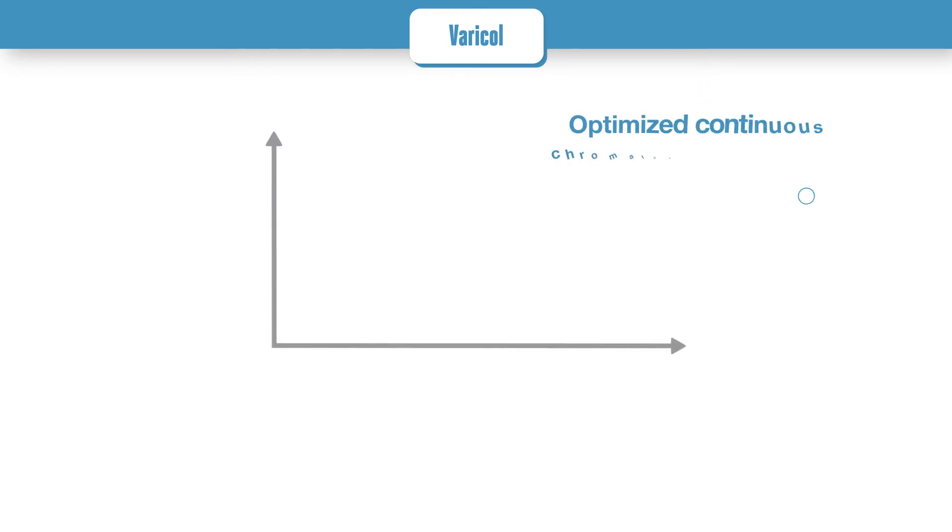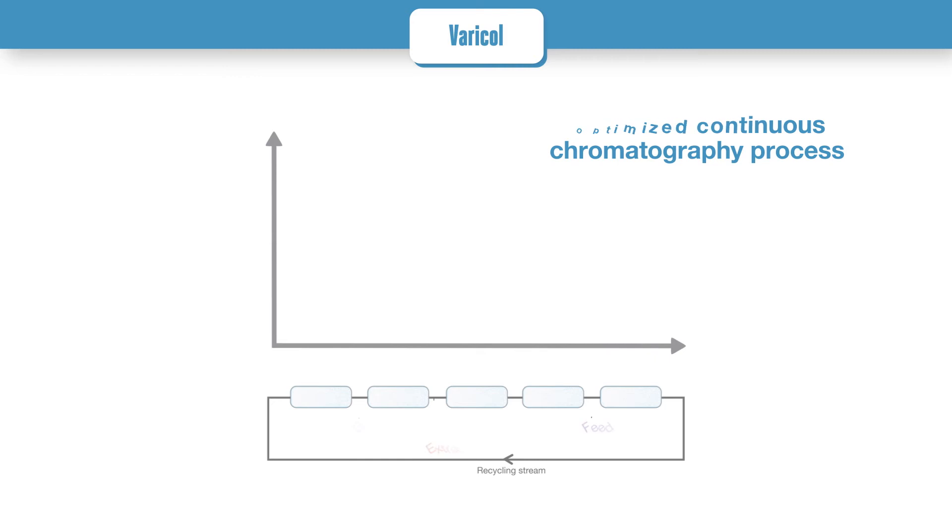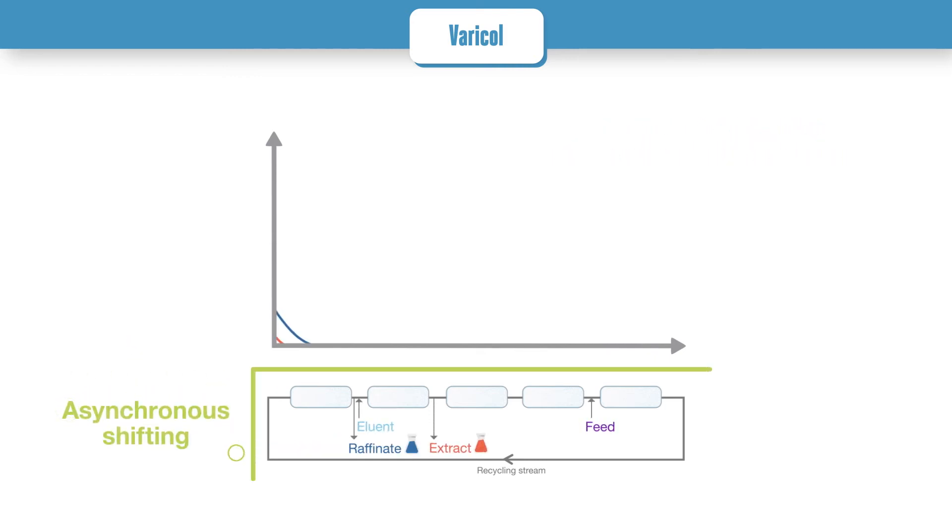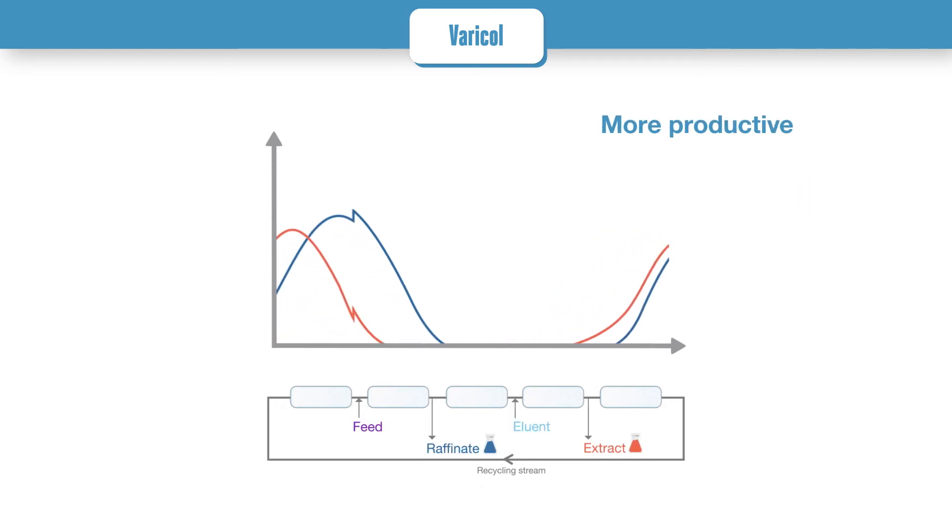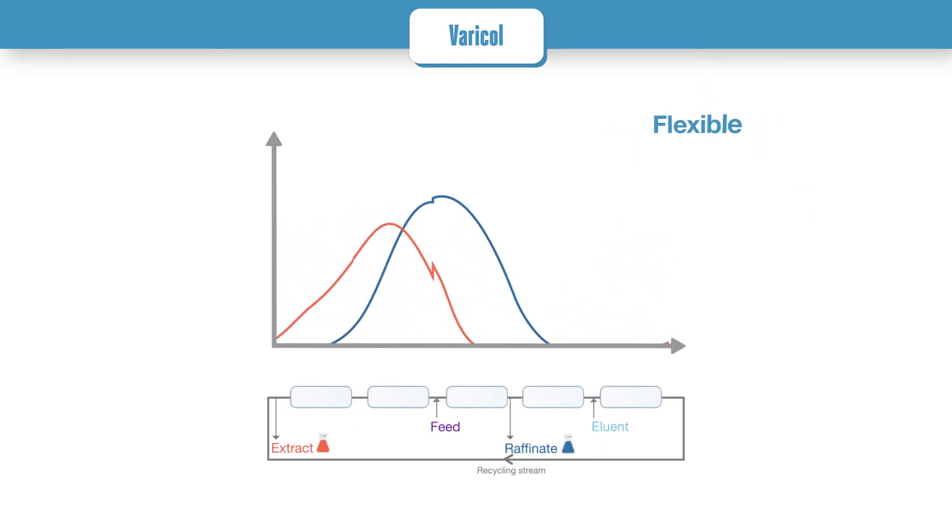Varicol is the optimized continuous chromatography process developed by Novacep. The shifting of inlet and outlet streams isn't synchronous, enabling a better utilization of the stationary phase, thus enabling the use of a lower number of columns and an improved productivity. Varicol brings more flexibility to reach optimum process performance.